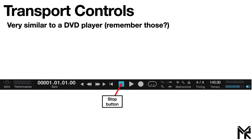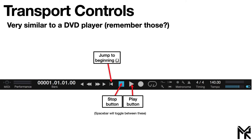Over here we have stop and play — pretty straightforward. The spacebar toggles between pausing and playing your track. You also have jumping to the beginning of your track, which can be enabled by hitting the comma key on your keyboard by default. You also have the option to record. The record button will either record any armed audio track, or if you have a MIDI track armed it'll record any MIDI information from a MIDI keyboard or external synthesizer.